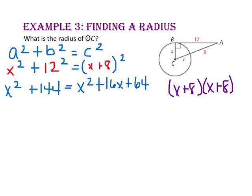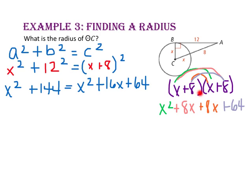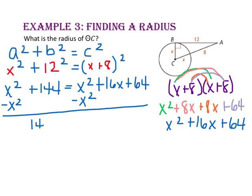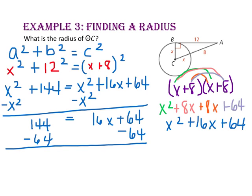In case you need a reminder, let's use the distributive property: X times X is X squared, X times 8 is 8X, 8 times X is 8X, and 8 times 8 is 64. Combining the two middle terms gives X squared plus 16X plus 64. Back to our equation, subtract X squared from both sides, leaving 144 equals 16X plus 64. Subtract 64 from both sides: 80 equals 16X. Dividing both sides by 16, 5 equals X.